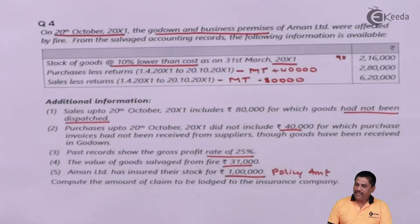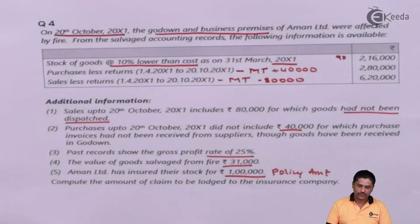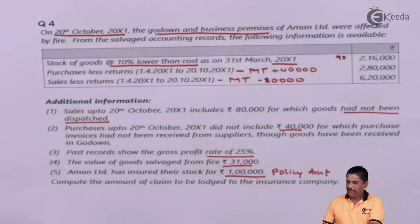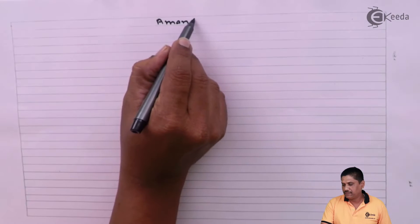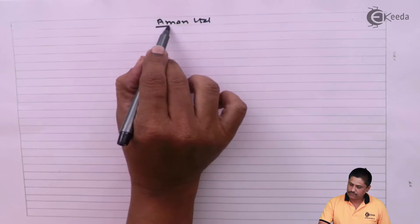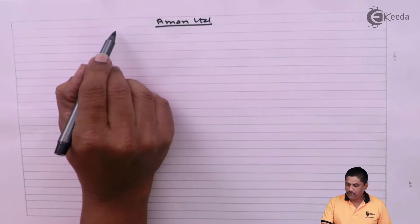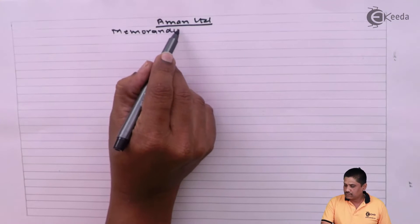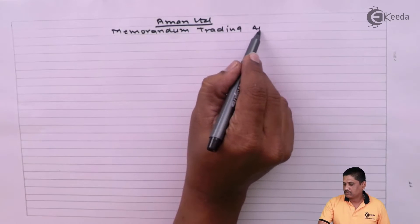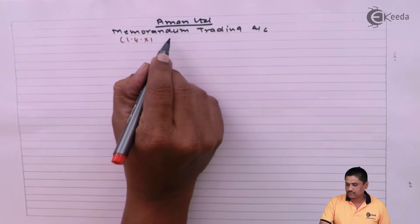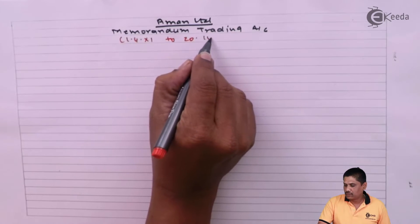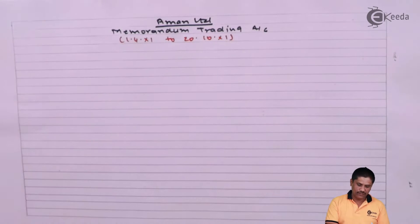In this example, we need to prepare the memorandum trading account directly. We need not prepare a trading account because the last year's GP ratio is readily provided. So come to your page and draft the memorandum trading account for Amal Limited, from the period 1st April X1 to 20th October X1.